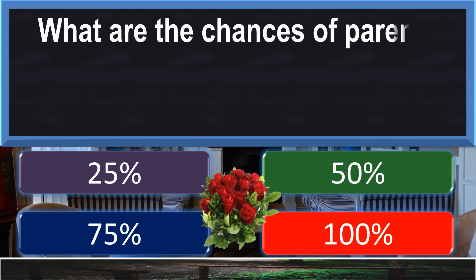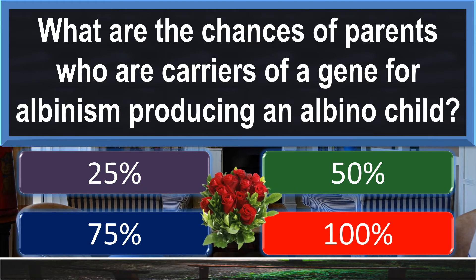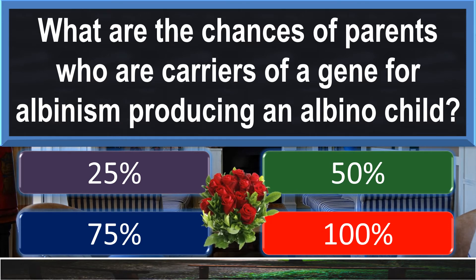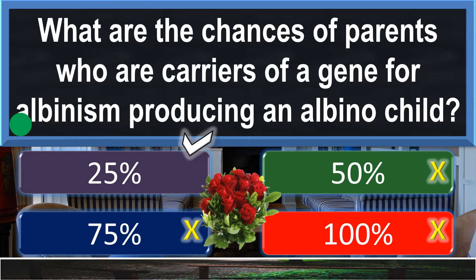What are the chances of parents who are carriers of a gene for albinism producing an albino child? 25%.